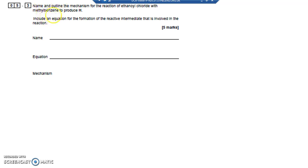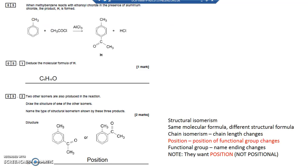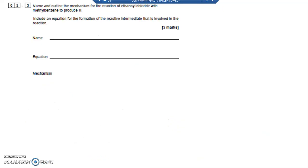Name and outline the mechanism for the reaction of ethanoyl chloride with methylbenzene to produce H. Include an equation for the formation of reactive intermediate that's involved in the reaction. So what actually happens here is the CH3COCl reacts with the AlCl3. The AlCl3 removes Cl- and leaves CH3CO+, forming AlCl4-.